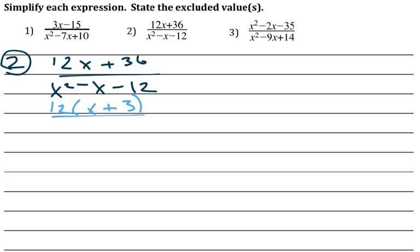From the denominator, I'm going to realize that this is a factoring problem where I'm going to have to look for the factors of negative 12 that add up to negative 1. So I have x minus 4 times x plus 3.